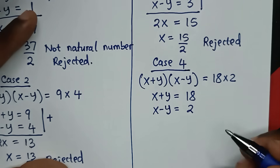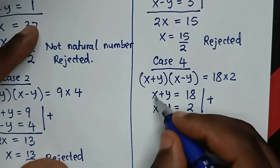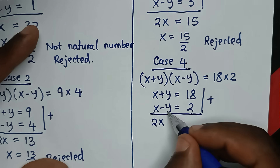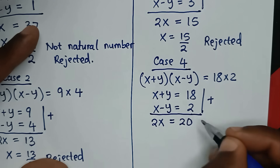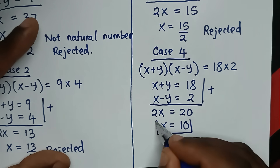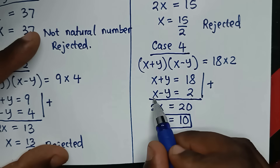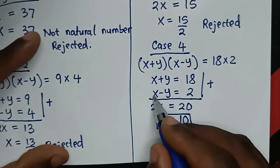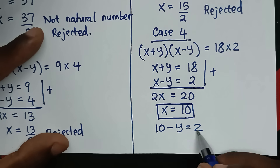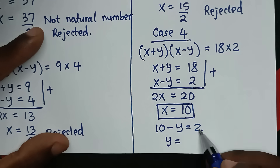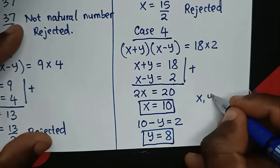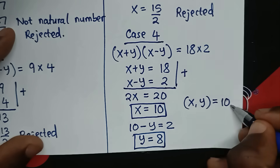From Case 4: x equals 10 and x minus y equals 2. Moving y to one side gives y equals 10 minus 2, which is 8. So the value of y is 8. Therefore x comma y is equal to 10 comma 8.